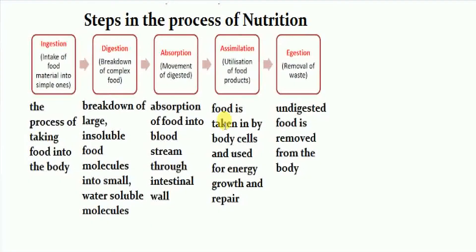There are five basic steps involved in the process of nutrition in animals. These steps are ingestion, digestion, absorption, assimilation, and egestion. The first step is ingestion — to get energy from food and to perform all metabolic activity, it is necessary to take food inside the body. So the process of taking food into the body is called ingestion.